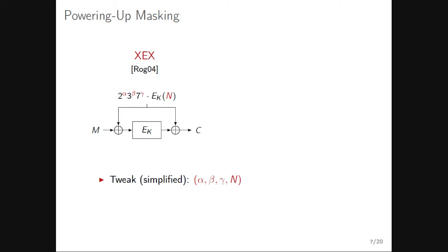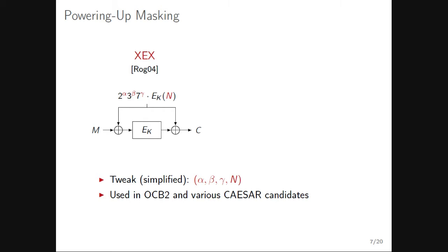One approach to generating masks is powering-up masking, introduced in the XEX construction by Rogaway in 2004. The tweak is composed of values alpha, beta, gamma, and a nonce n. You first encrypt the nonce using the block cipher, then modify this base value by multiplying it by 2^alpha * 3^beta * 7^gamma. By changing alpha, beta, and gamma, you generate new masks.